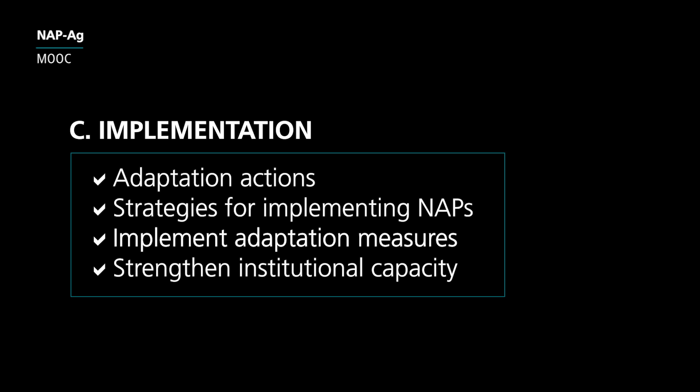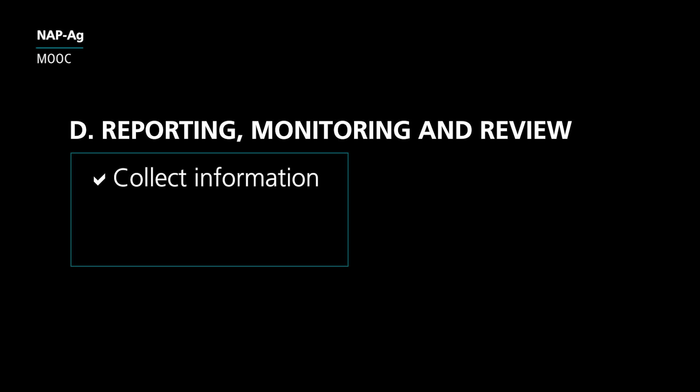The final block is element D — monitoring, reporting, review and dissemination. These activities can be carried out throughout the NAP process. In element D, countries collect information on the NAP process, assess it through a national MNE system, and share outputs to report progress to the UNFCCC. The important questions here are: what information and metrics are needed to monitor progress, gaps and lessons of the NAP process? What is the best way to share the NAP documents with the UNFCCC Secretariat and other stakeholders? Time spent here may result in a plan for MNE, progress reports, and an updated NAP.